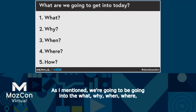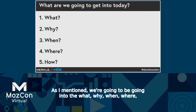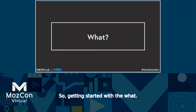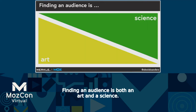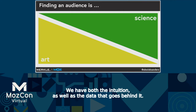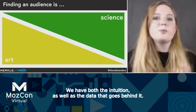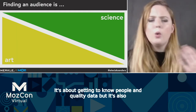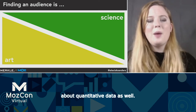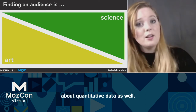We're going to be going into the what, why, when, where, and how of finding your specific audience. Getting started with the what: finding an audience is both an art and a science. We have both the intuition as well as the data that goes behind it. It's about getting to know people and qualitative data, but it's also about quantitative data as well.